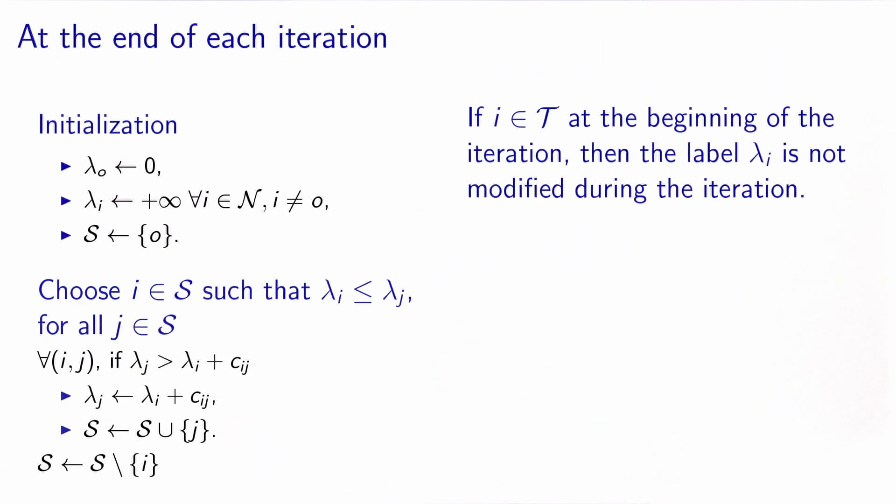So the next property has been actually presented in the previous property. If a node is in the set T at the beginning of the iteration, then its label is not modified during the iteration. This is a corollary of the previous property because all the labels inside T actually verify the optimality condition already.